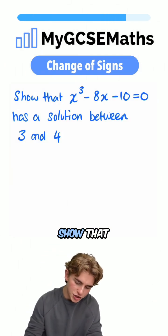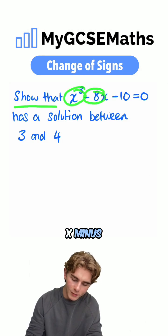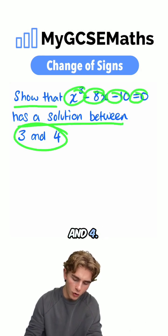This question says show that x³ - 8x - 10 = 0 has a solution between 3 and 4.